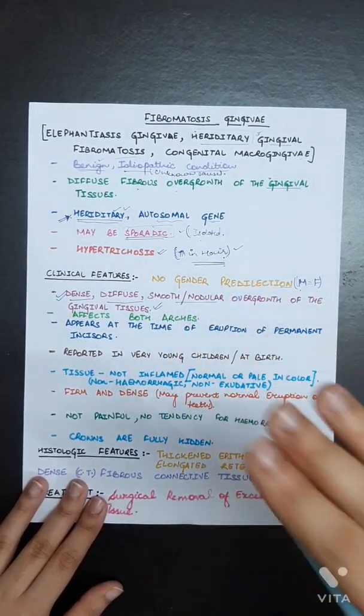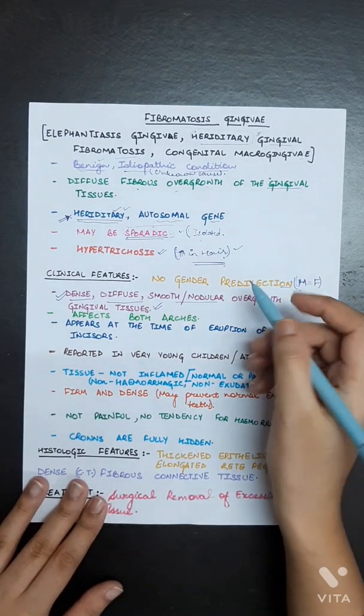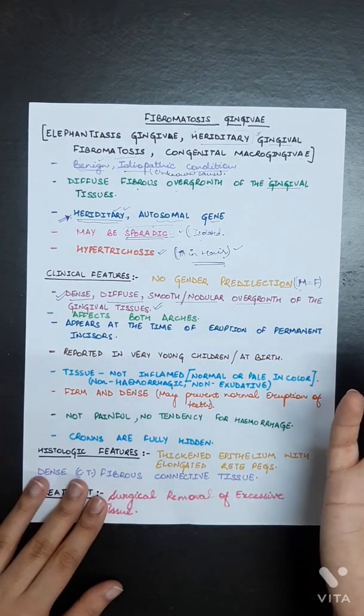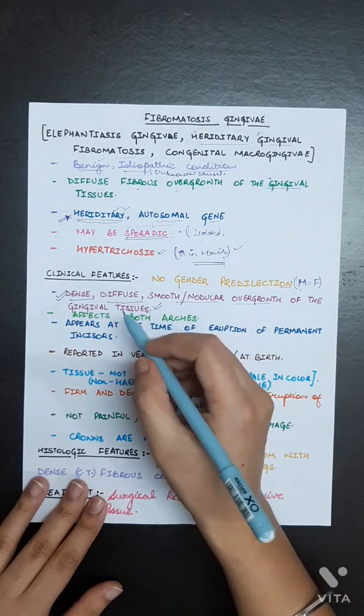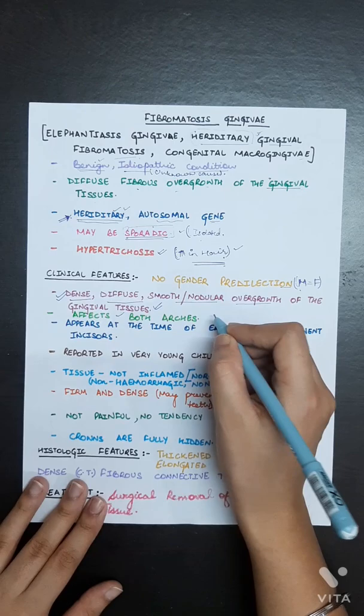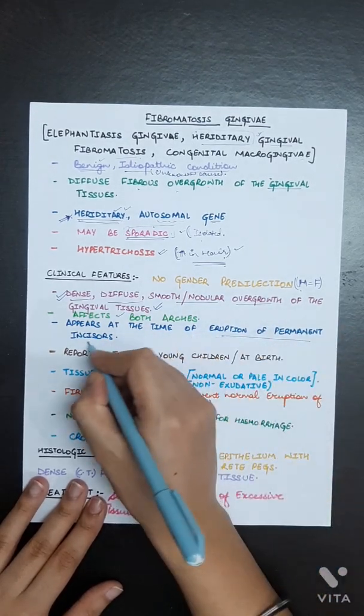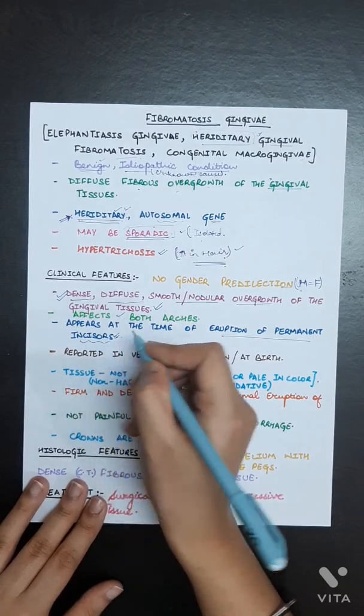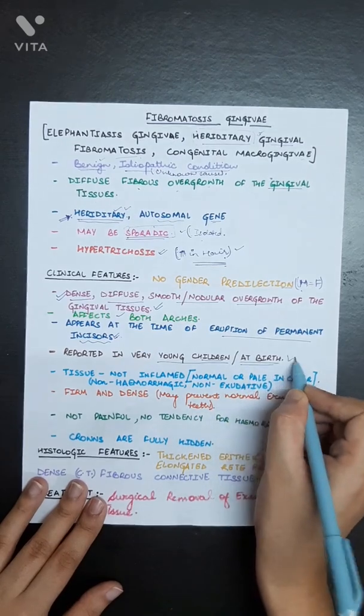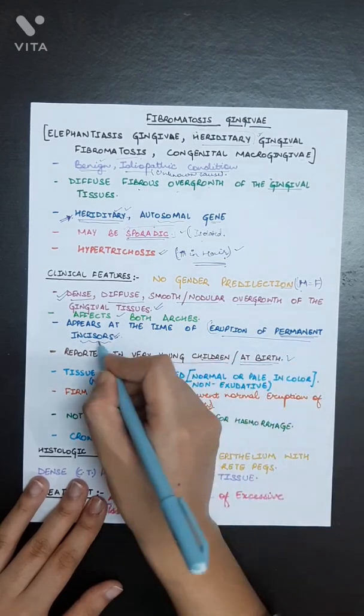As the name suggests, fibromatosis gingiva, there will be an overgrowth of gingival tissue which will be seen in the affected arch. Maxilla and mandibular arches are equally affected in this condition. It appears at the time of eruption of permanent incisors, so basically this condition affects very young children or at birth.